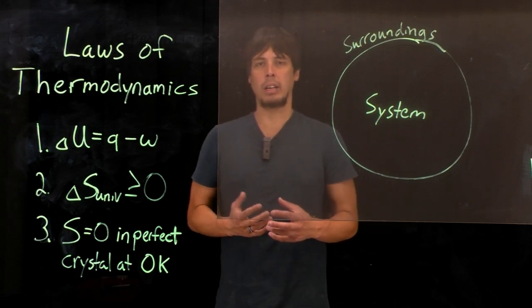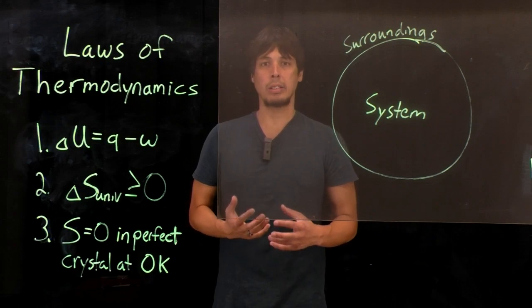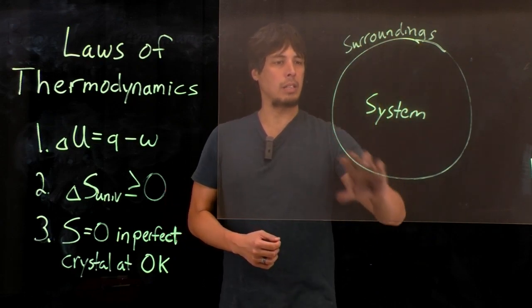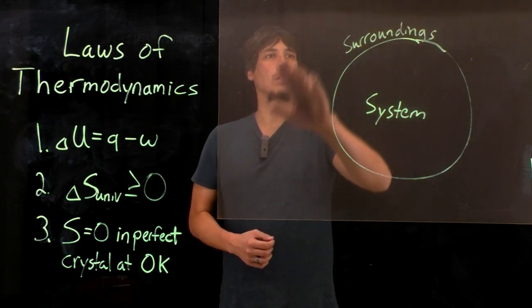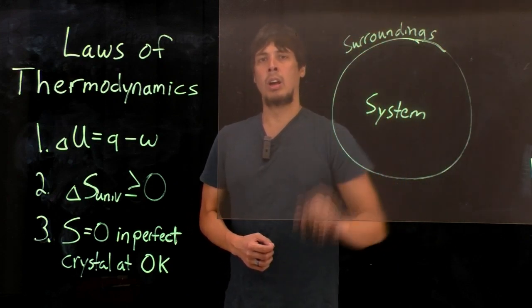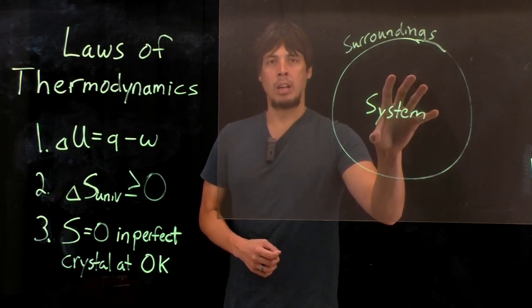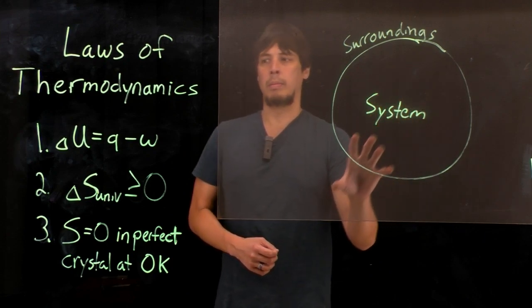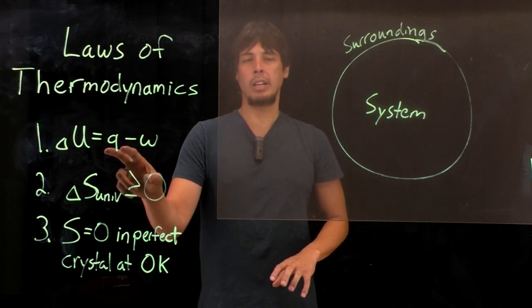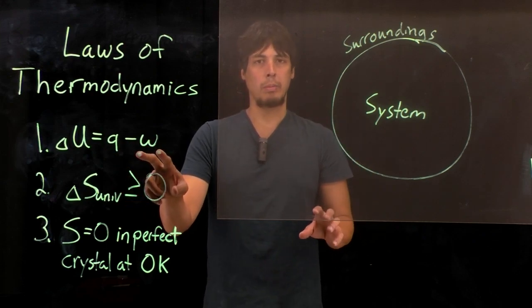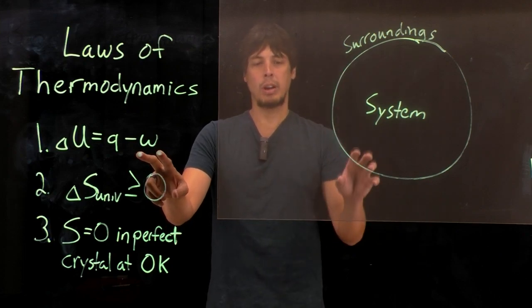So what this means when we're looking at a reaction inside of a system. If we define a system as inside of the circle and everything outside of the circle is the surrounding, what that tells us is that the change in energy happening within the system can be accounted for by the change in heat between the surroundings and the system and the work being done between the surroundings and the system.